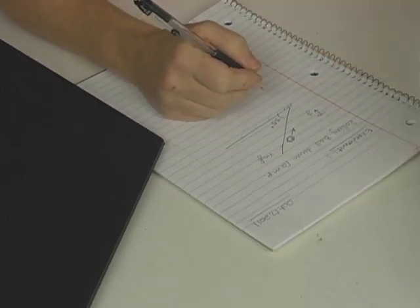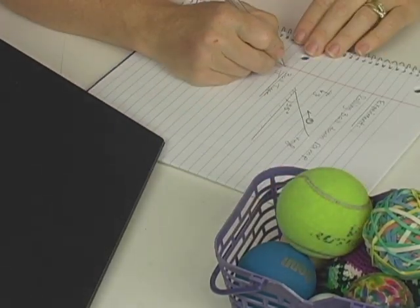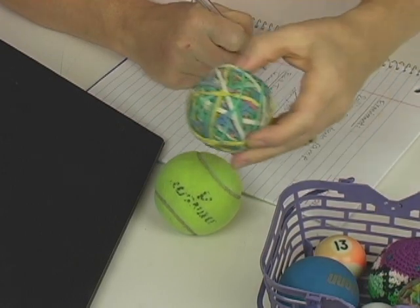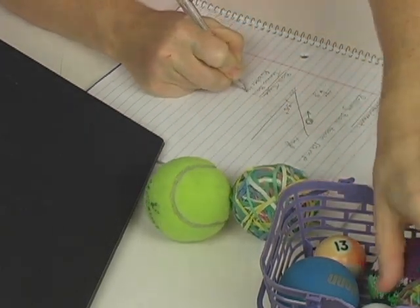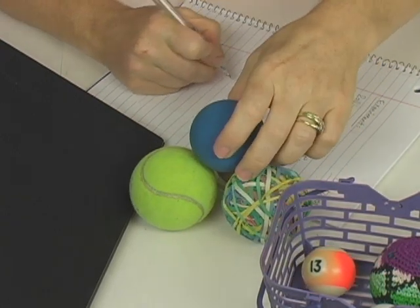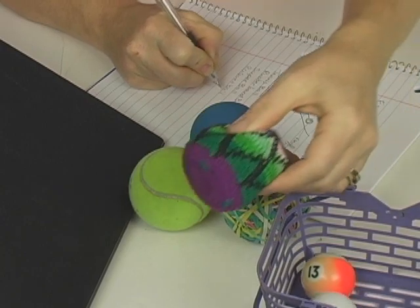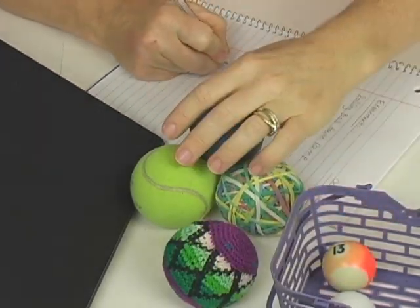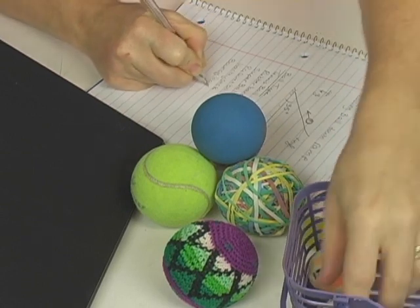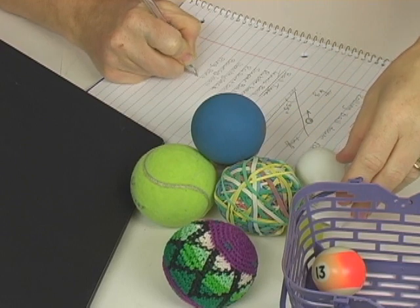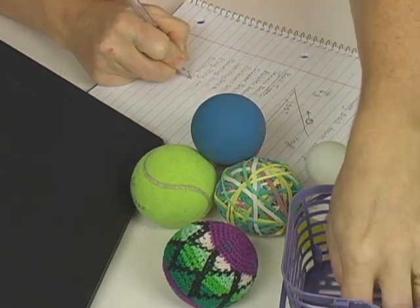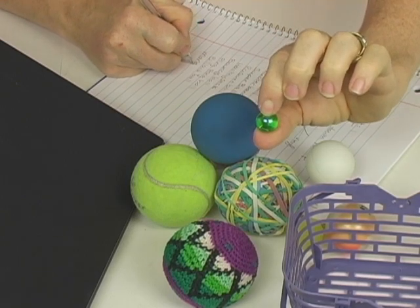So now we're actually going to do our experiment. And before we do that, I want to write down all the different kinds of objects that I've got here. So I've written down ball type, and I'm just going to go through them. So I've got a tennis ball, a rubber band ball, a super ball, a racquet ball, a hacky sack, a tiny bouncy ball, a ping pong ball, a billiard ball, and a marble.